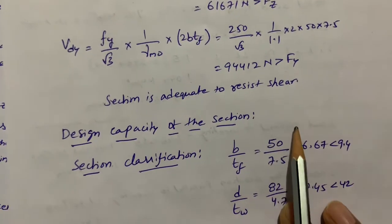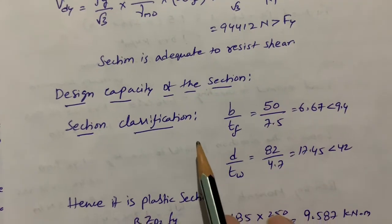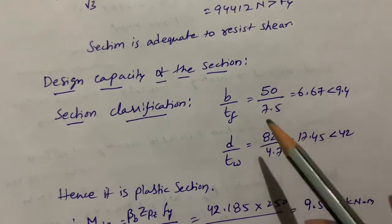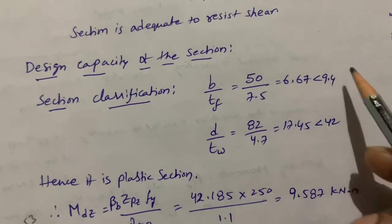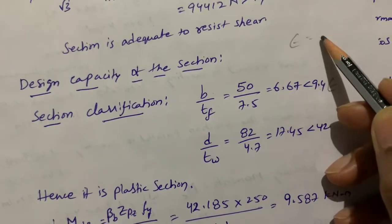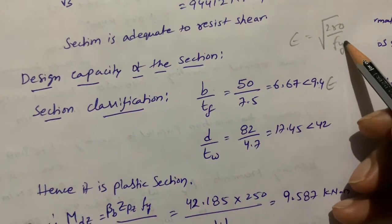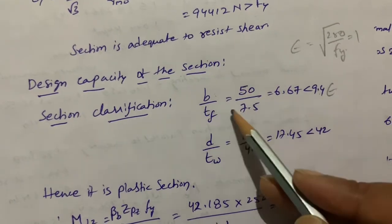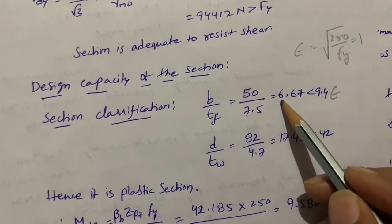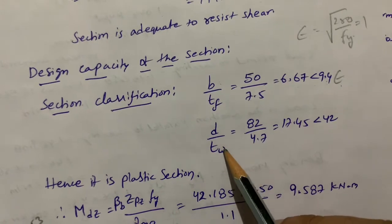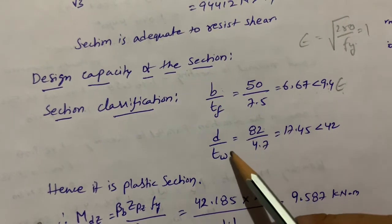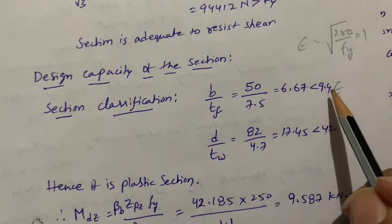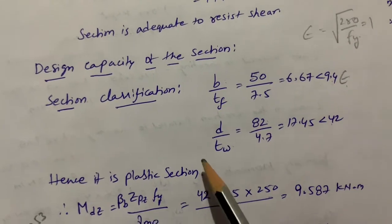After calculating shear capacity, we check the section classification using limiting width-to-thickness ratios from IS 800 2007 in tabular form. The limit is B/TF < 9.4ε, where ε = √(250/Fy). Since Fy = 250, ε = 1, so the limit is 9.4. B/TF = 50/7.5 = 6.67, which is less than 9.4. Also D/TW = 82/4.7 = 17.45, which is less than 42. Hence the section belongs to the plastic section class.